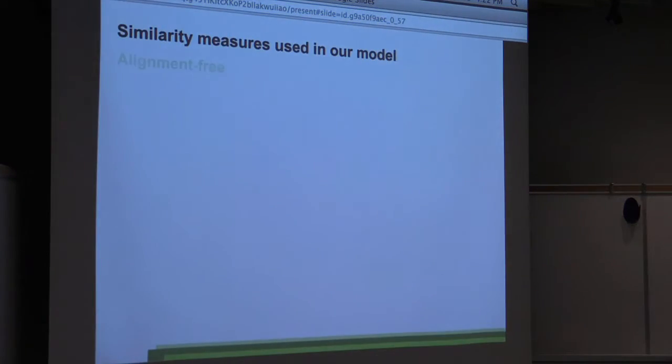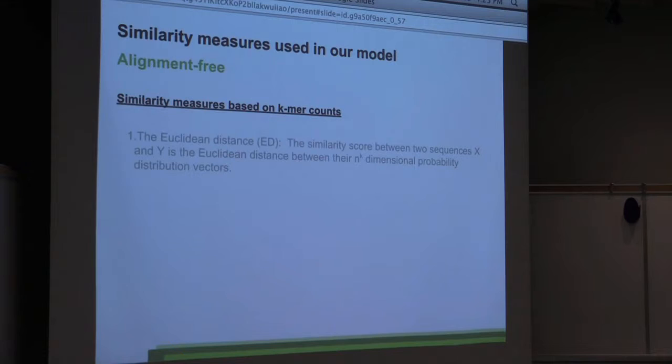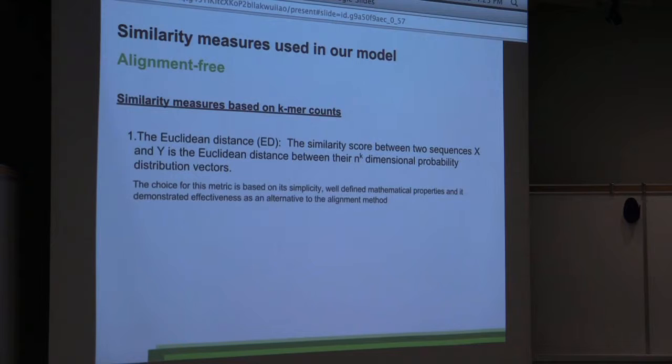So what are the similarity measures that we are using in our model? They can be separated in two: the alignment-free and the alignment-based ones. The alignment-free, those that are based on k-mer counts, we're using the Euclidean distance. So basically we count the k-mers in sequence X and sequence Y. Then this basically forms an Euclidean space, and we look at the distance between these two vectors in Euclidean space. We calculate the distance between these two sequences. The choice of this metric is based on its simplicity, well-defined mathematical properties, and the fact that it was already used as an alternative to alignment-based methods.